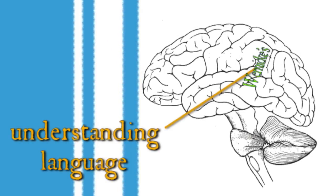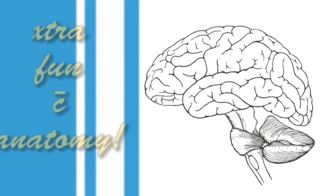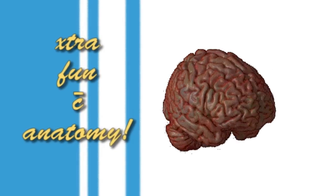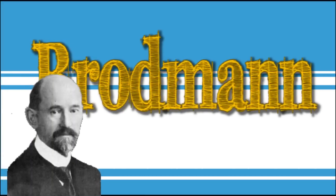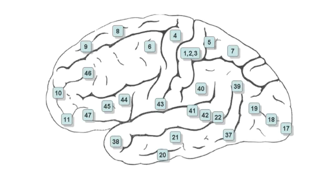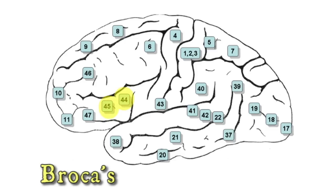A little side note for you anatomy buffs or anyone looking for extra credit. Today's most widely used system for cutting the brain into regions was proposed by another German anatomist, Corbinian Brodmann. This outer surface of the brain we've been admiring has over two dozen of these Brodmann areas. Broca's corresponds to Brodmann areas 45 and 44, while 22 is home to Wernicke's area.